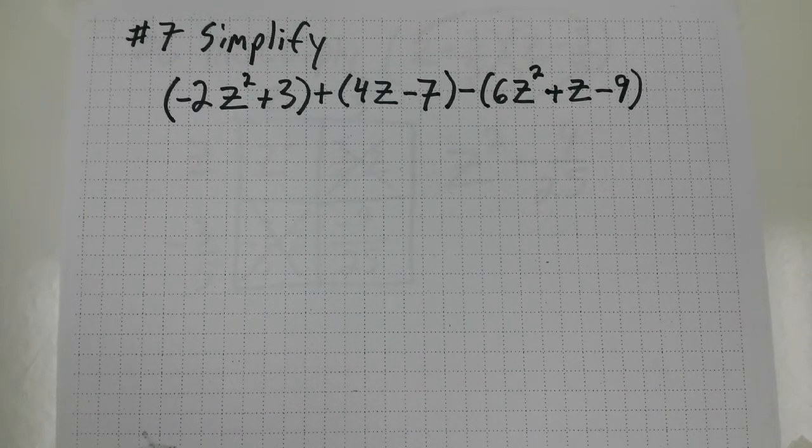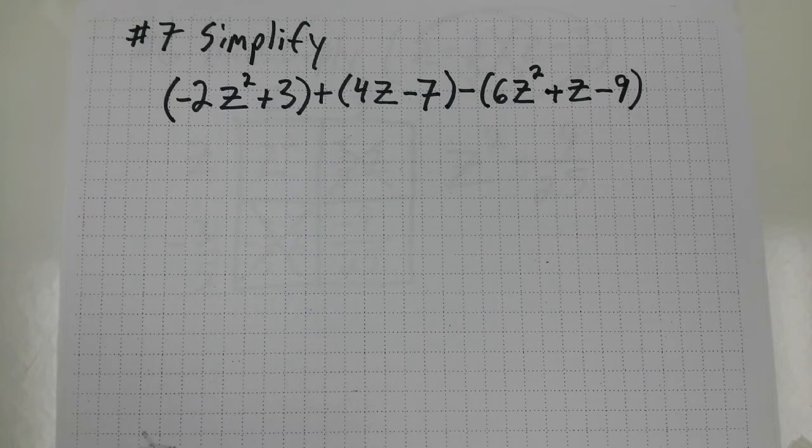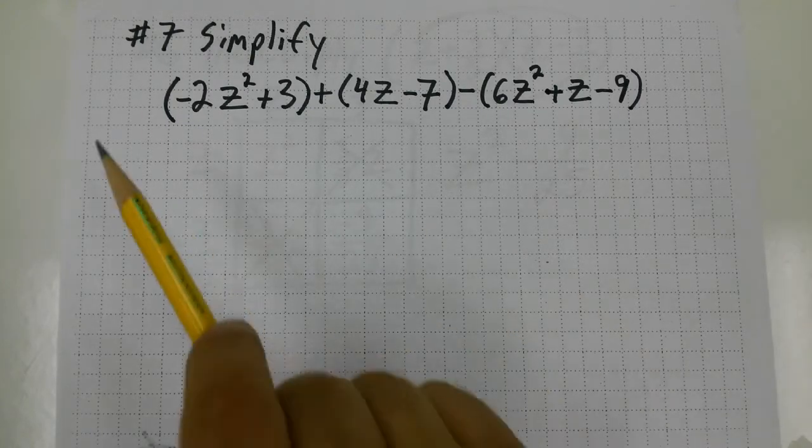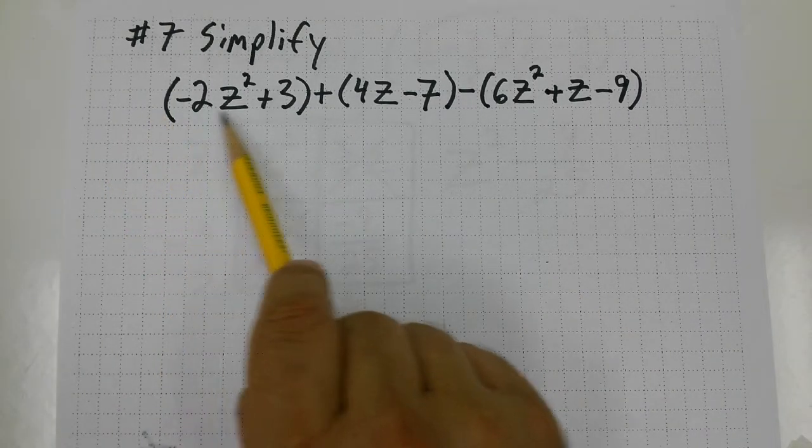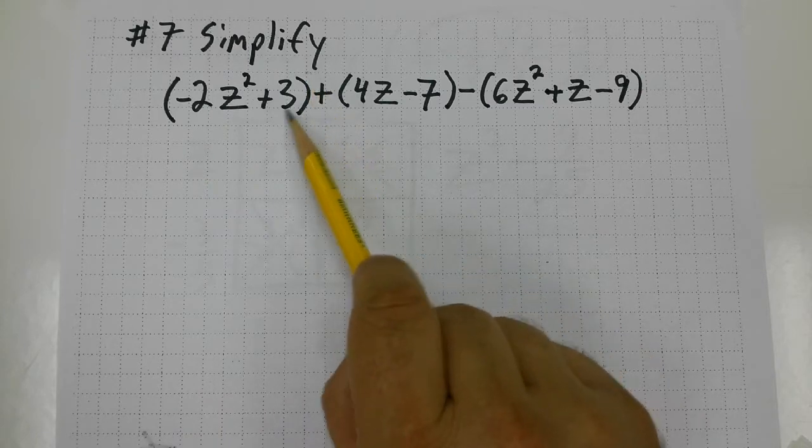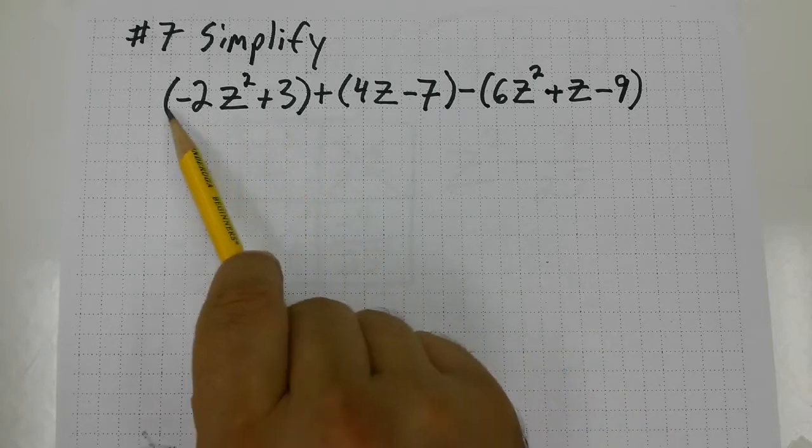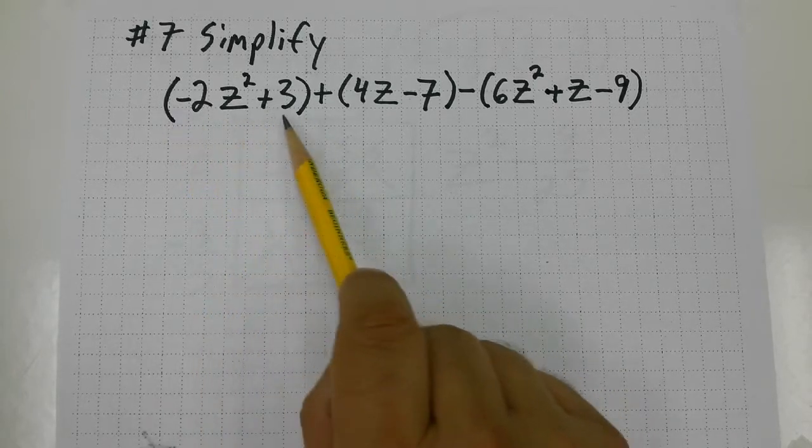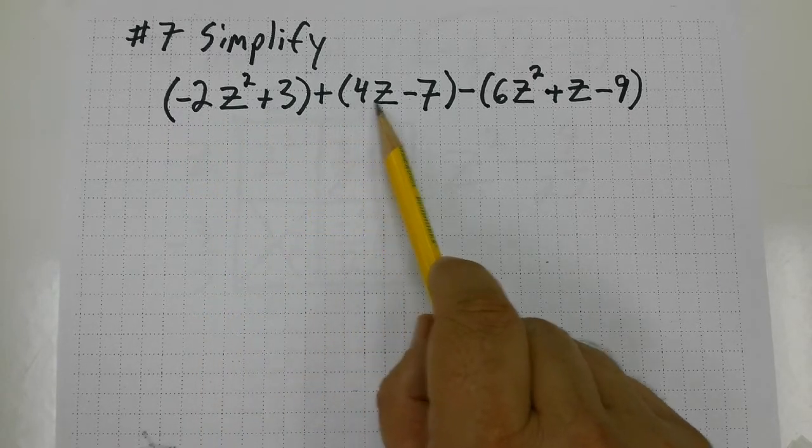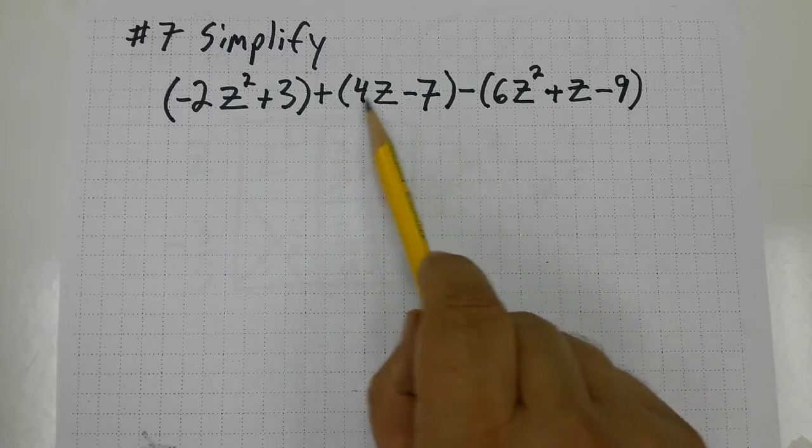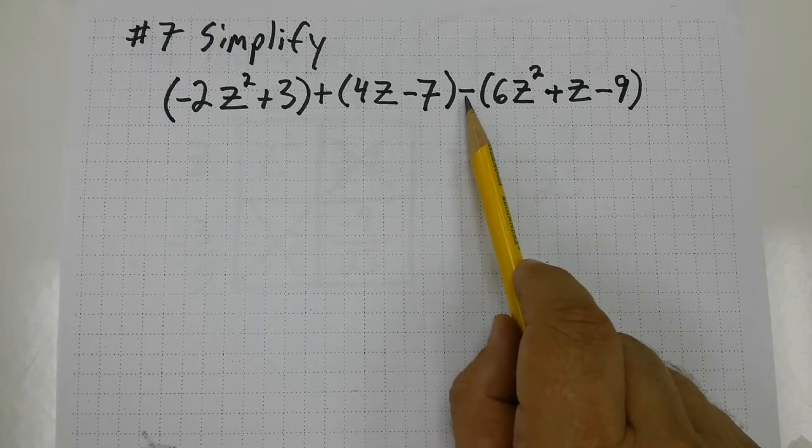First off, I notice there's no symbol in front of this parenthesis and no exponent up there, so I really don't need these parentheses for this first quantity or this first expression. Plus sign, I really don't need these parentheses for this expression either.